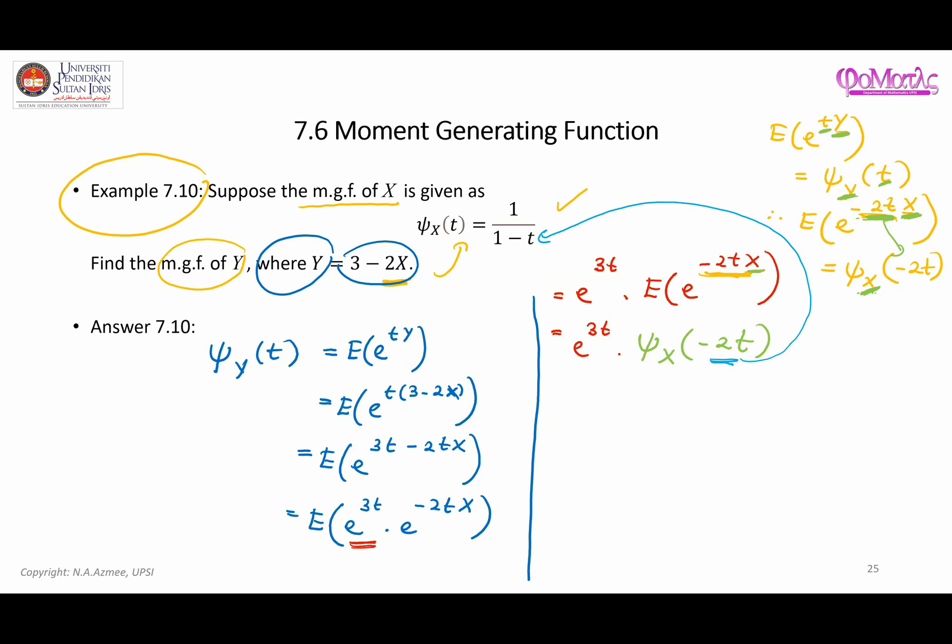That's the idea, like how normal function works. So final answer to that, it becomes e^3t. So the mgf of X is 1 over 1 minus negative 2t. And it becomes e^3t over 1 plus 2t. So that's the answer. That is the mgf of Y.